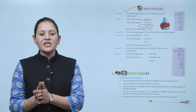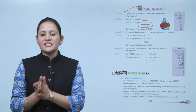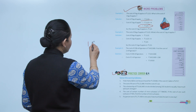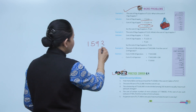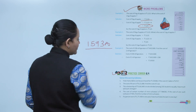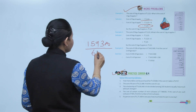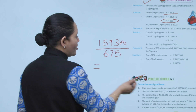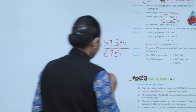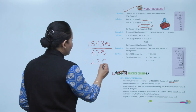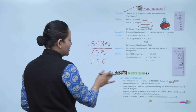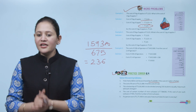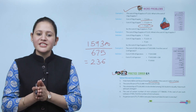Practice corner 6.4: how many tables can be purchased for rupees 1,59,300 if the cost of 1 table is rupees 675? Divide total cost by cost of 1 table: 1,59,300 ÷ 675 = 236. So 236 tables can be purchased. Practice all the questions of this exercise.